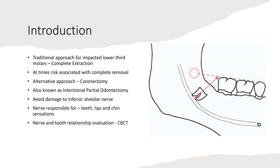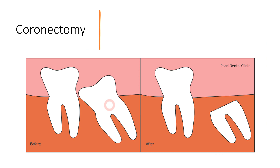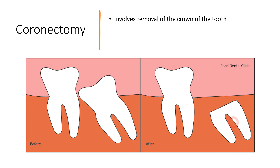To evaluate the relationship of the roots to the inferior alveolar nerve, we use CBCT, which tells us how closely the roots are associated with the nerve. In this diagrammatic picture you can appreciate the second molar, the impacted third molar, and the inferior alveolar nerve nearby. We remove the crown only, leaving the roots as they are, saving the inferior alveolar nerve. Comparing the before and after picture, only the crown is removed and the roots remain — this is the basic concept of coronectomy.